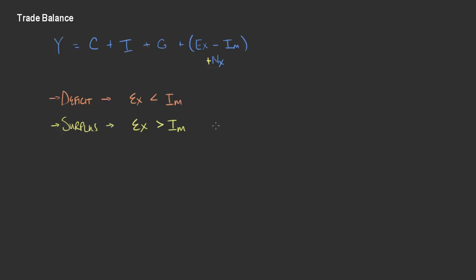What does this kind of look like? If I just draw this out simply, we have quantity for a good and price for a good. We've got the demand and the supply for the goods — these would be domestic suppliers and domestic demanders. If these are exports, that means the price they can sell the good in the world — the world price — is higher than the equilibrium point. As a result, instead of selling this domestic quantity, we actually end up selling much more — this extra quantity, which I'll call quantity trade. And that extra surplus goes to producers.